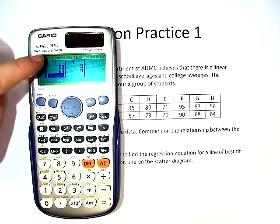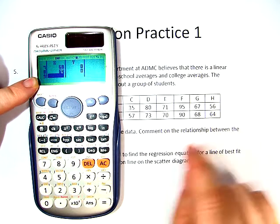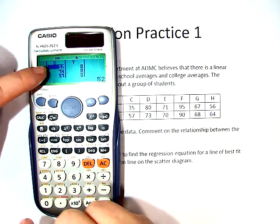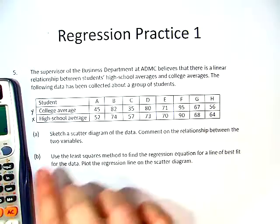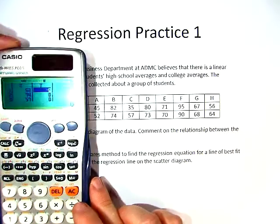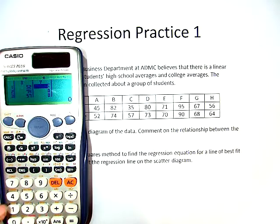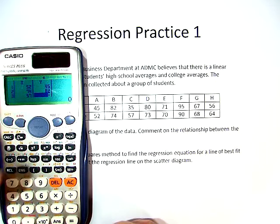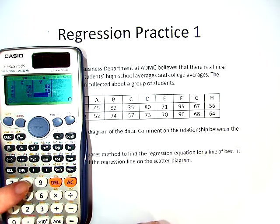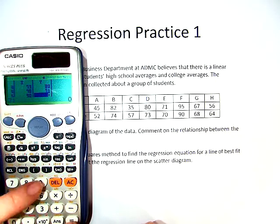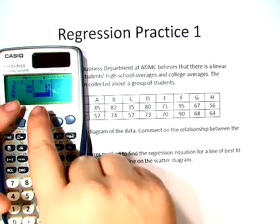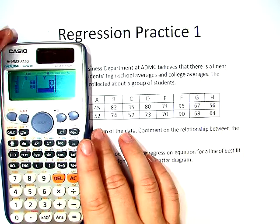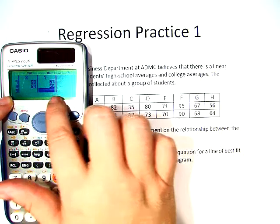Once we've put in all of our data, in this case H or 8 points, we're going to hit the down button again. That sends us back to the top of our list. We move over and we're going to put in the college averages into the calculator as well. So we start with 45, 82. Remember to hit equals after each one to go down. 35, 80, 71, 95, 67, and 56. These should always match up. As you can see here, number 9 is blank on both.